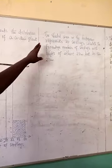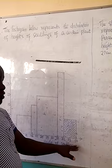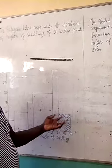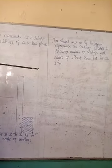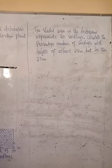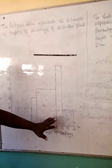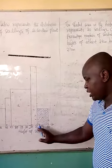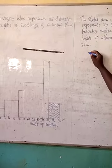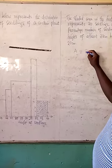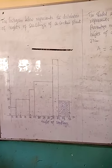The question states that the shaded area in this histogram — you can see that one of the bars is shaded, the bar ranging from 32 to 34 — represents 20 seedlings. We need to calculate the percentage number of seedlings with heights of at least 23 but less than 27. The width of that shaded bar is from 32 to 34, meaning the width is 2. The area of that bar equals 2 times a height of 10.